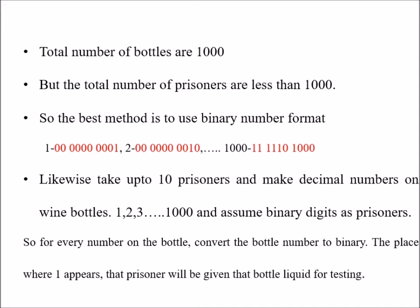First, number the bottles from 1 to 1000 and convert every number into binary format. The positions where 1 appears determine which prisoners receive that liquid quantity for testing.